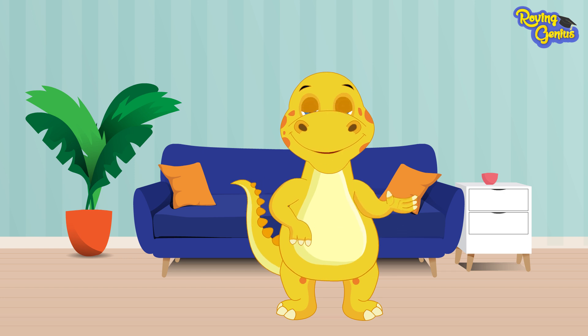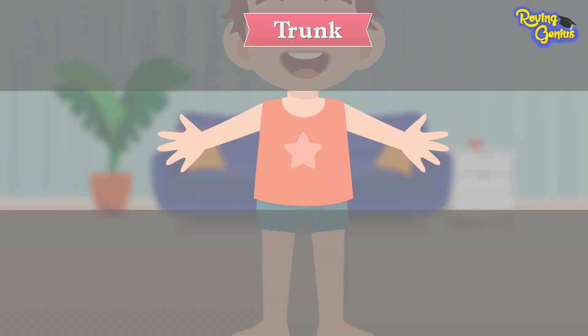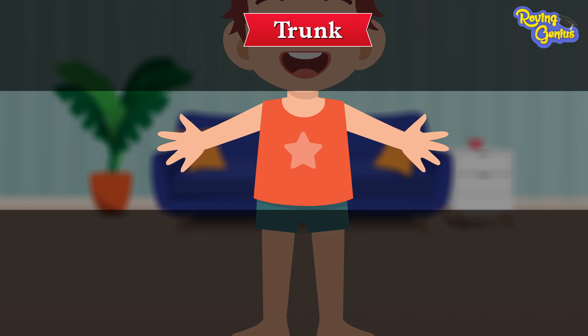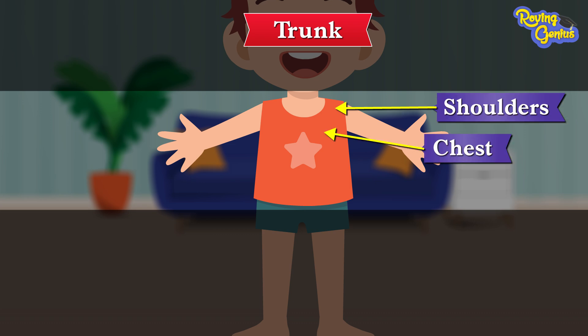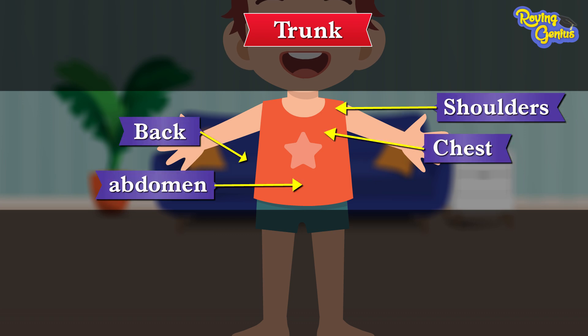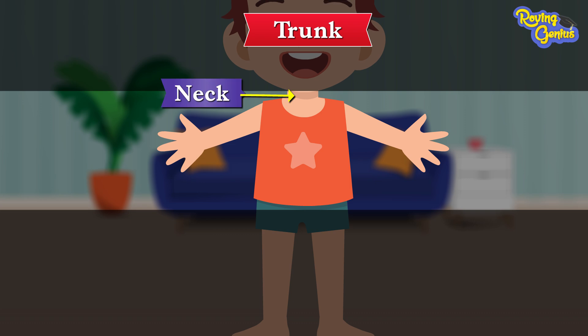Hello friends, today we will be talking about some parts of our main body. Our trunk is the main part of the body that contains our shoulders, chest, back, and abdomen. Our neck connects the head and the trunk.